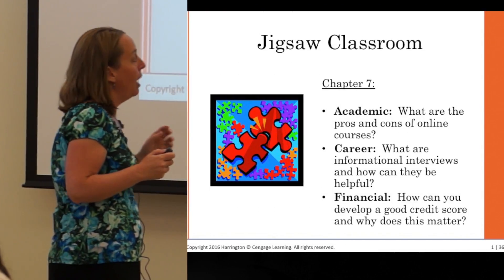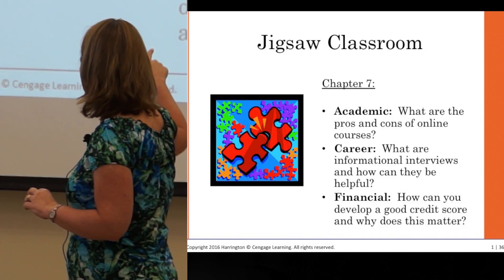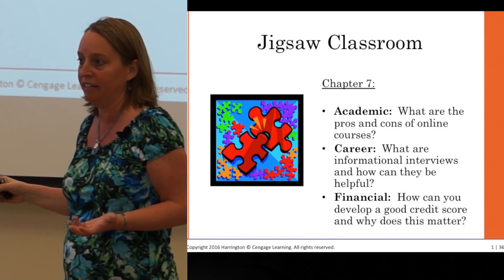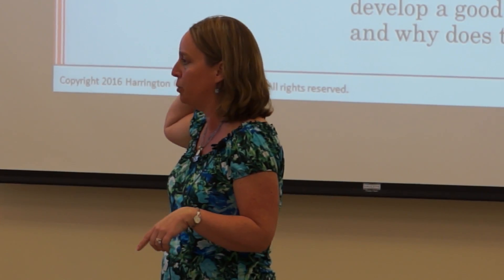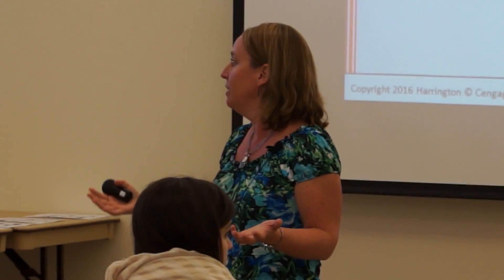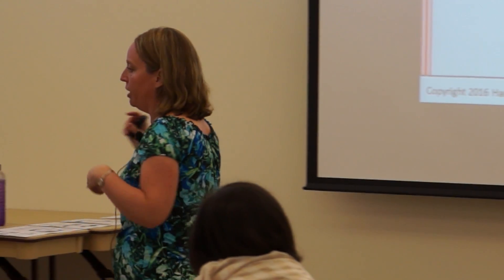Any questions about the general process? We're going to try it now. I'm going to ask you all to identify one of these areas — you'll be answering the question attached to it. This is chapter 7 content. Each of you at the table has to pick: one person picks academic, one picks financial, one picks career. If your group is not three people, that's fine — two of you can share one topic and work together. So decide which expert group you're going to be part of, take a minute to talk at your table, and then we'll be leaving your tables and moving to the expert group in just a moment.